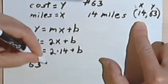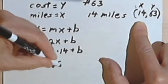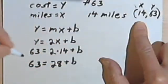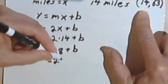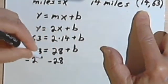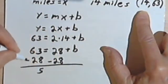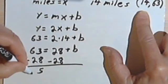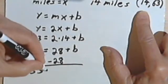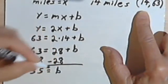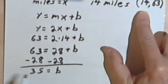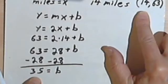Okay, so 63 equals 2 times 14 is 28 plus B. We'll subtract 28 from both sides. And now we're going to get, let's see, that's a 5 and 3. So B is 35. That would be the basic fee that the company's charging for renting the truck, as well as the two dollars per mile.